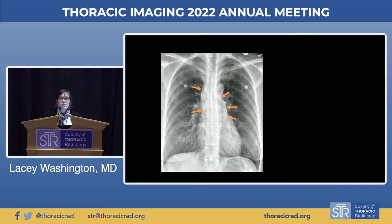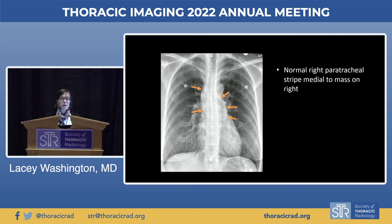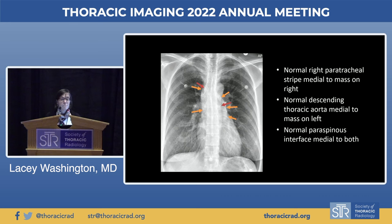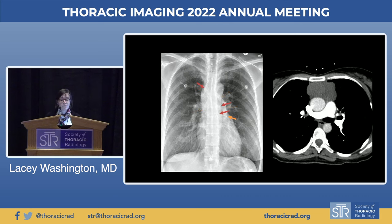This is an extremely subtle case. You can see a normal right paratracheal stripe medial to the mass on the right, the normal descending thoracic aorta medial to the mass on the left, and a normal paraspinous interface medial to both. This is hard to see, but there is a mass here — all these interfaces being well preserved suggest it's probably anterior or prevascular.